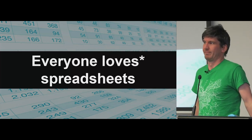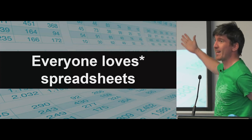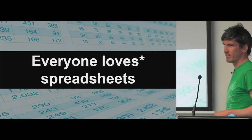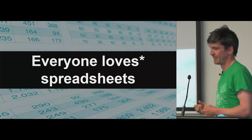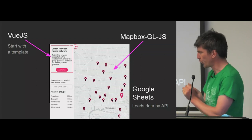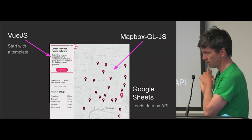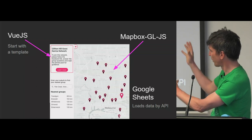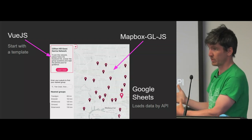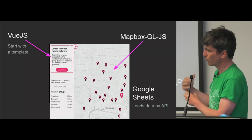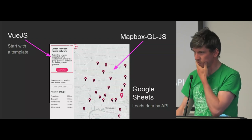Then I had an epiphany — well, I had a slide. Everyone loves spreadsheets. I use spreadsheets now to power the sites that I build. In the case of the Good Karma network, Vue.js is the framework for the whole thing, starting with the template. Mapbox GL.js, which I'm super familiar with — it's kind of my bread and butter for the mapping bit. And then there's Google Sheets, hiding behind the scenes, lurking there with this dastardly CSV API.